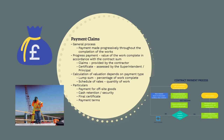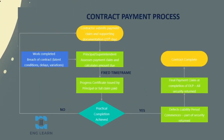A lump sum item may be calculated on a percentage complete, while schedule of rates will use quantity of work actually completed. The contractor will need to specify particulars for variable situations — for example, whether the contractor can receive payment for goods stored off-site, requirements for cash retention or security, the process for issuing a final payment certificate, and any payment terms and requirements. All of this will be defined in the contract.